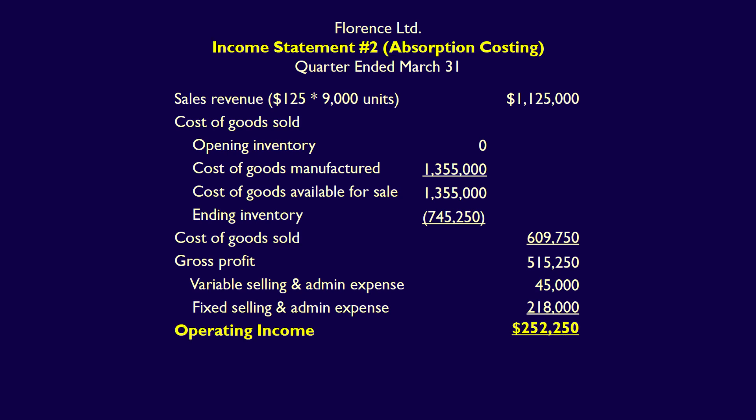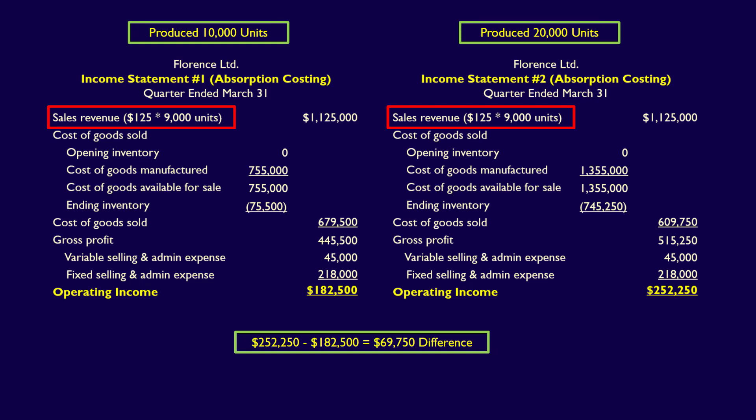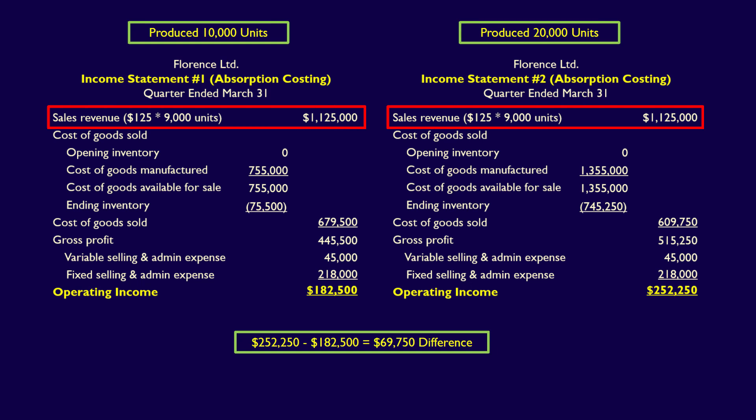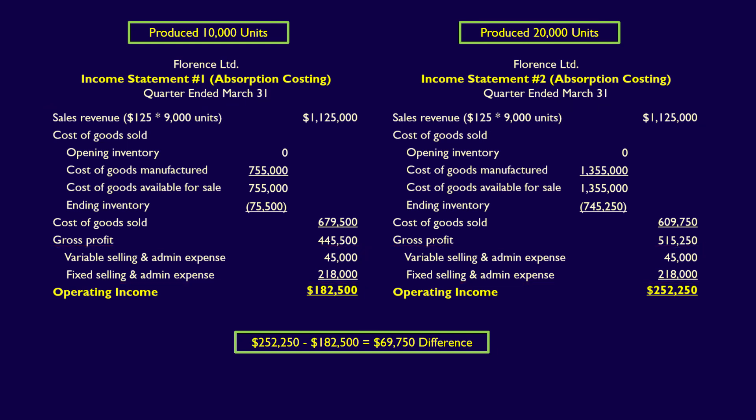But wait — operating income is $252,250. We sold 9,000 units, the same 9,000 units as in Income Statement Number One with a production level of only 10,000 units. How is it possible that we're selling the same number of units but our operating income has totally changed? It is $69,750 higher. Comparing Income Statement One, when the company produced 10,000 units, to Income Statement Two, when the company produced 20,000 units, we sold the exact same 9,000 units with the exact same sales revenue of $1,125,000, and the exact same selling and admin expenses of $45,000 and $218,000.